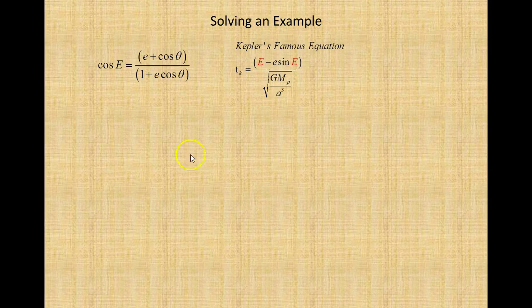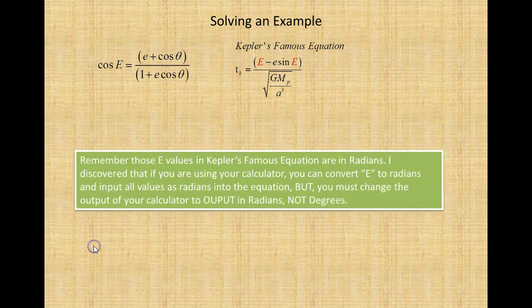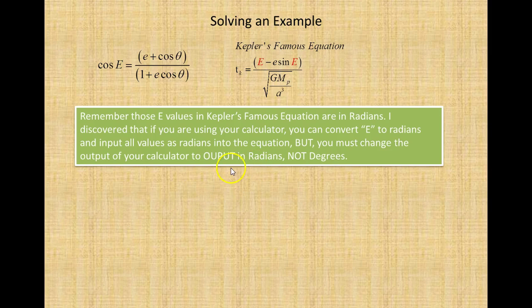Let's solve an example using cosine E to develop the E values for Kepler's famous equation, showing how to work in either radians or degrees. Books say E in Kepler's famous equation must be in radians, but that doesn't have to be true. If using a calculator, you can convert E to radians and input all values as radians — both the first and second E in the equation — but you must change your calculator output to radians, not degrees.